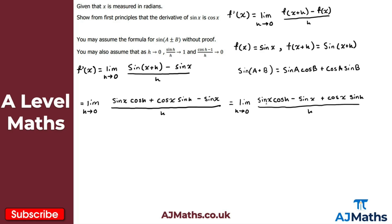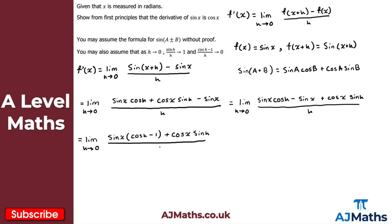So factoring sin x out, I get the limit as h tends to zero of: sin x times (cos h minus one), plus cos x sin h, all over h. This is looking promising because we now have cos h minus one appearing in the numerator alongside h in the denominator.